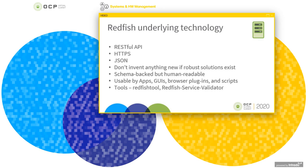Redfish can be used by apps, GUIs like the OpenBMC GUI, browser plugins, and scripts. There are several open source tools already available for Redfish, including Redfish Tool, a command line tool for accessing a Redfish implementation, and the Redfish Service Validator for checking a Redfish implementation against the schema.